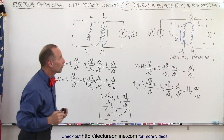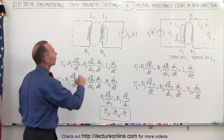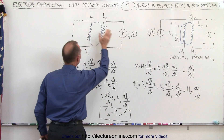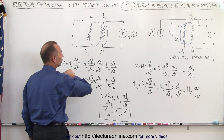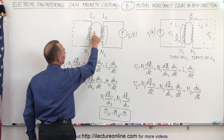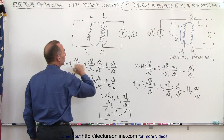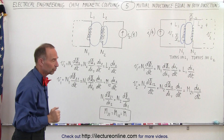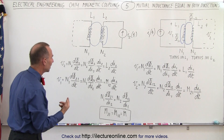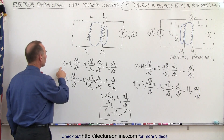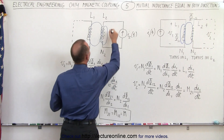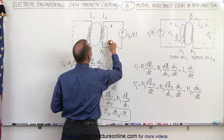But now we can turn things around. Now we can have the current source in the second circuit and no current source in the first circuit. Notice we have the very same two inductors with the very same number of turns.